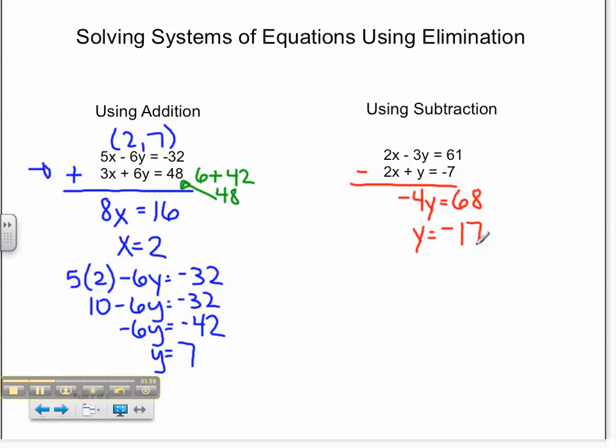Now, I need to plug that in to find out what x is equal to. So, 2x plus negative 17 equals negative 7. That leaves me with 2x equals 10, and x equals 5.